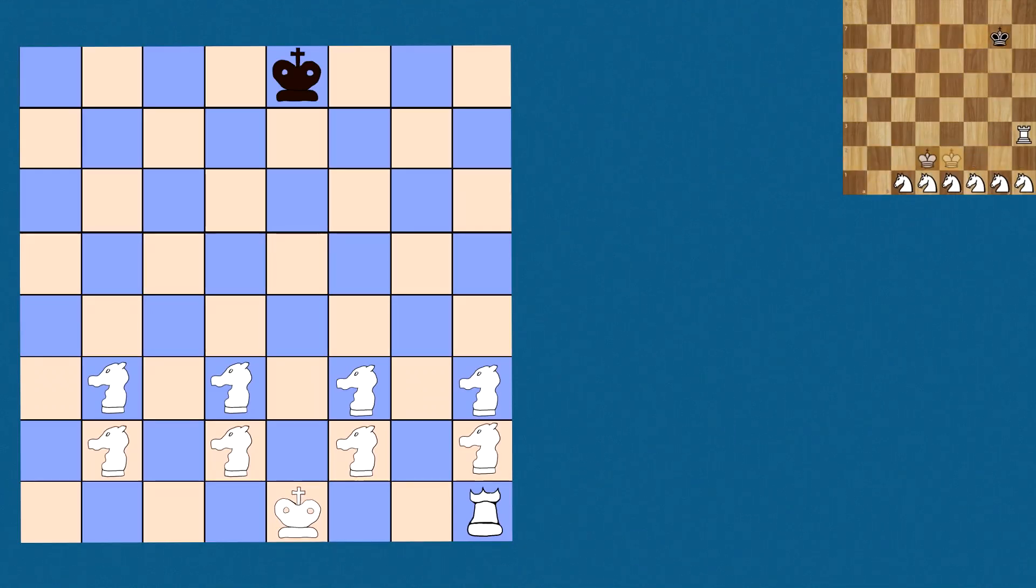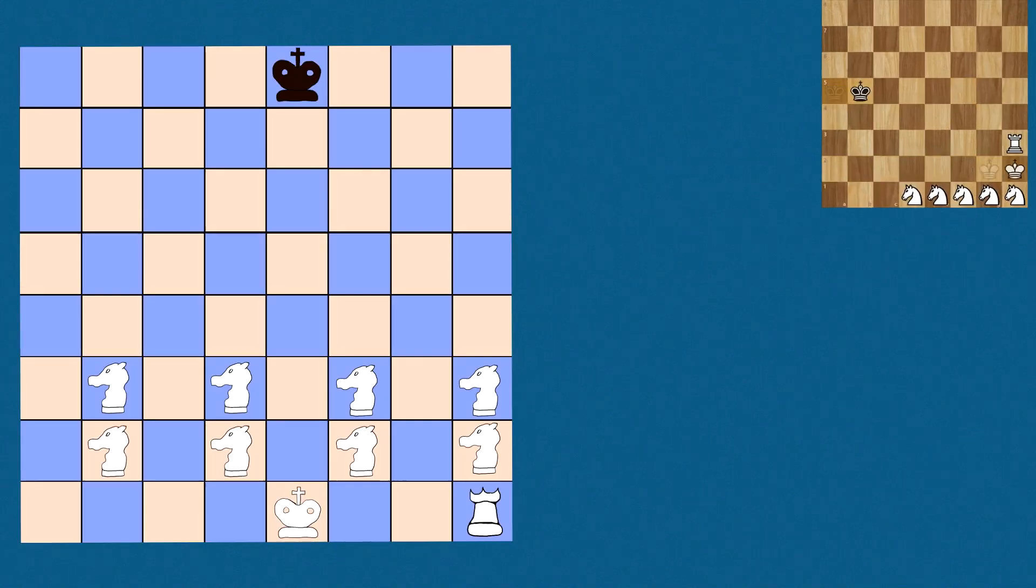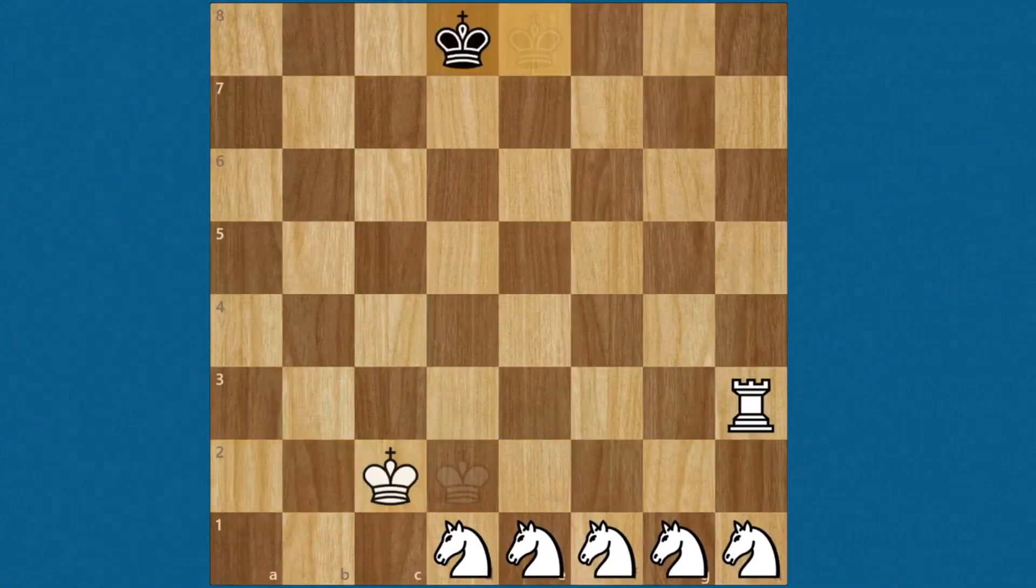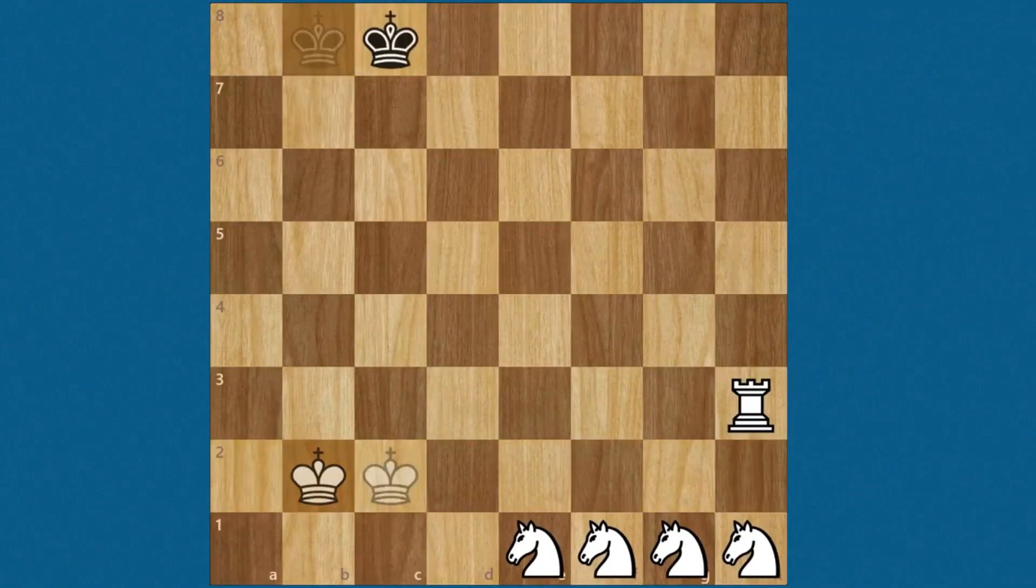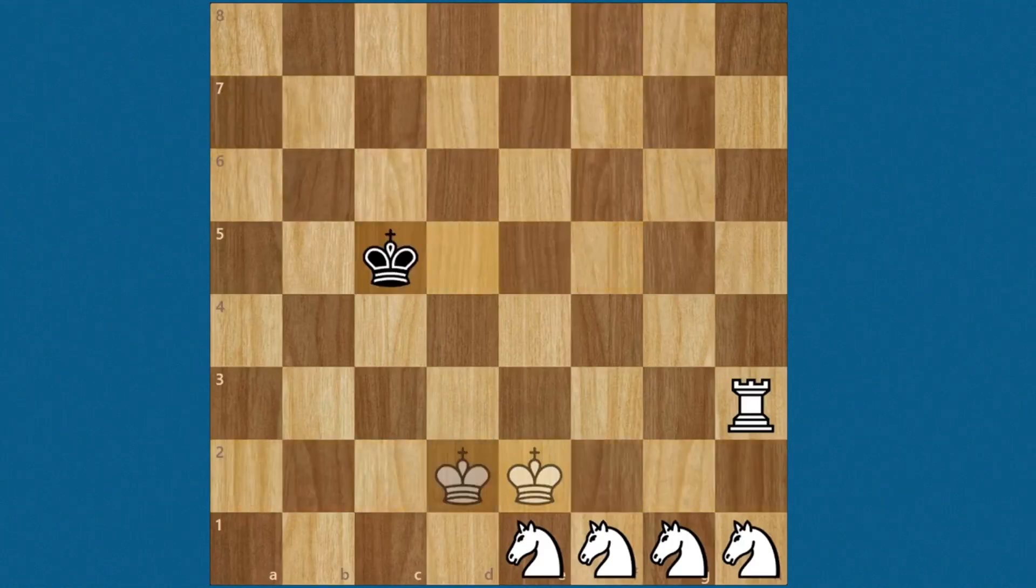Of course, when white starts capturing, we lose our fourth tempi here. The fourth and final tempi we lose is when black will now finally return the favor and capture all of white's pieces, completing the cycle and finishing the game.